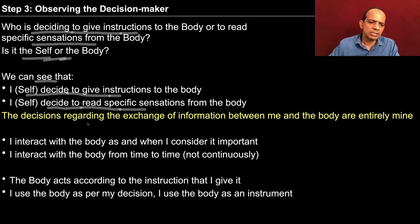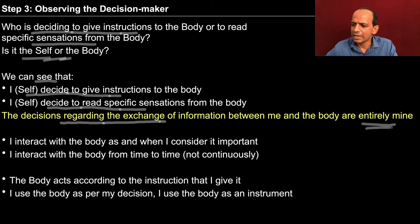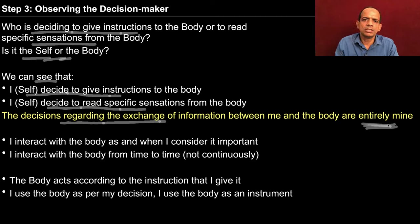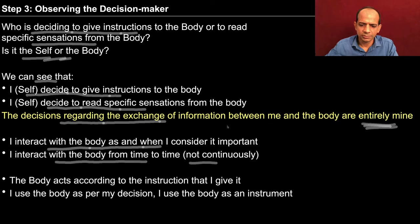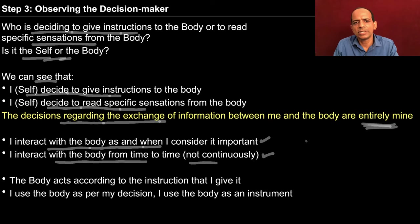If you observe closely, you see that you are taking a decision every time. The decisions regarding the exchange of information between me and the body are entirely mine — I am the decision maker. Something similar we observed in exercise 1 also: who is deciding the feeling? We found it is me who decides the feeling. Similarly in my interaction with the body, it is me who decides to interact with the body. I interact with the body as and when I consider it important, from time to time and not continuously.